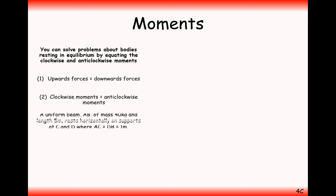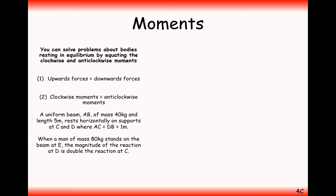For the next question: a uniform beam of mass 40 kilograms and length 5 metres rests horizontally on supports at C and D, where A to C and D to B are each 1 metre. When a man of 80 kilograms stands on the beam at E, the magnitude of the reaction at D is double the reaction at C. By modelling the beam as a rod and the man as a particle, find the distance A to E.